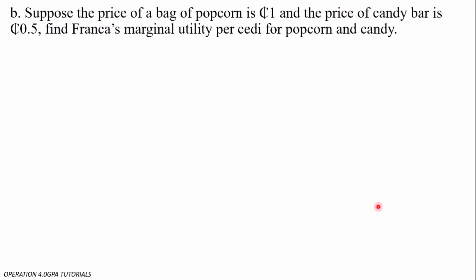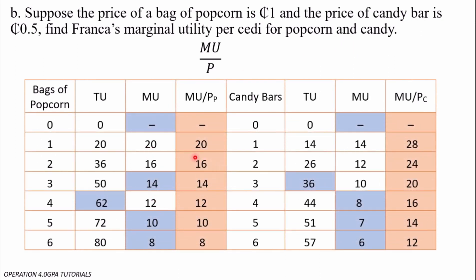The next question says: suppose the price of a bag of popcorn is 1 cedi and the price of a candy bar is 50 pesewas — find Franca's marginal utility per cedi for popcorn and candy. This is simply marginal utility over price. For popcorn at 1 cedi, dividing the marginal utility by 1 gives the same value. For candy bars at 0.5 cedi, dividing 14 by 0.5 gives 28, and dividing 12 by 0.5 gives 24, and so on for all columns.